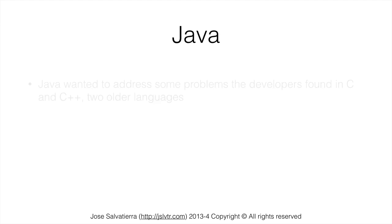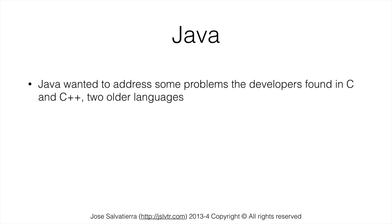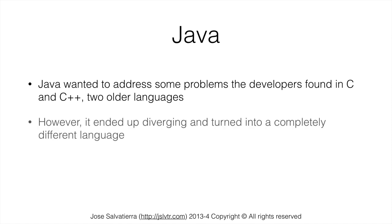By the time Java came out, the developers wanted to address problems found in C and C++, which were two older languages that had a few annoying features. However, it ended up diverging from that objective and turned into a completely different language. Java is mostly used for the web, server-side development, and cross-platform applications that aren't very resource-heavy. Because Java is an interpreted language, it is therefore slower than compiled languages.